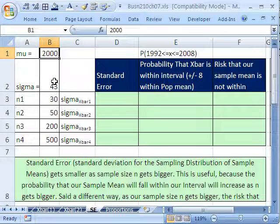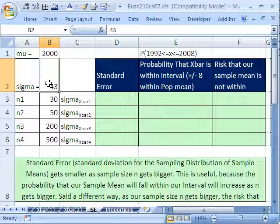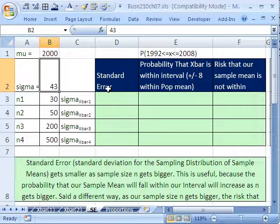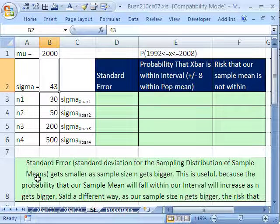We have a mu of 2000, population mean, sigma population 43. And we want to see what happens to our standard error, which is the standard deviation for our sampling distribution of the sample means, as n changes.